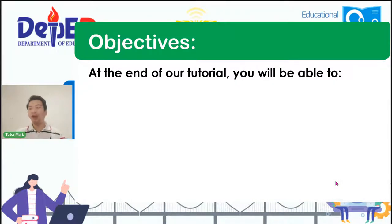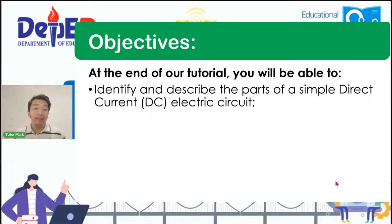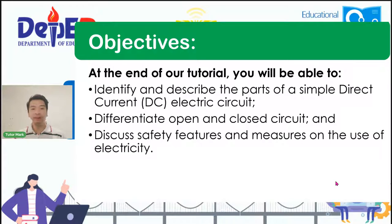At the end of our tutorial, you will be able to know the following things. Number one is to identify and describe the parts of a simple direct current or DC electric circuit. Number two, differentiate an open and closed circuit. Number three, discuss safety features and measures on the use of electricity.